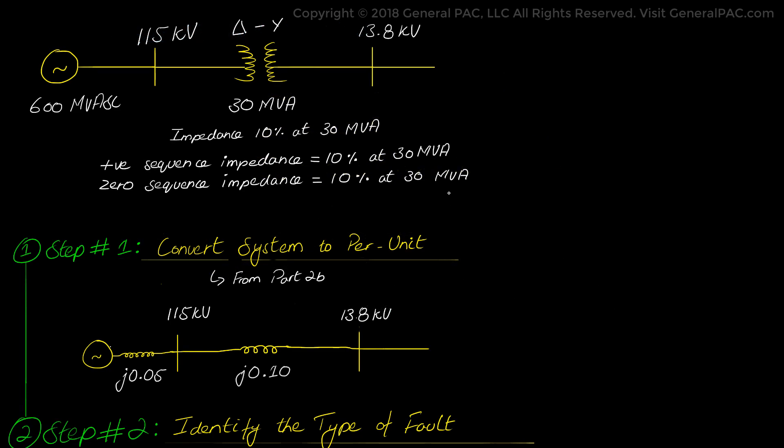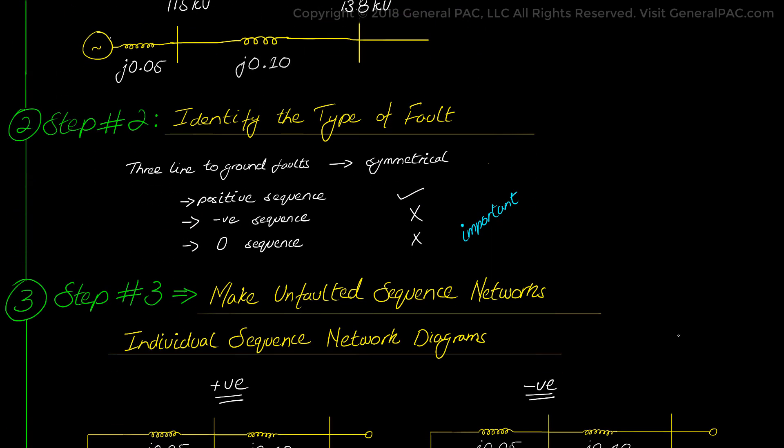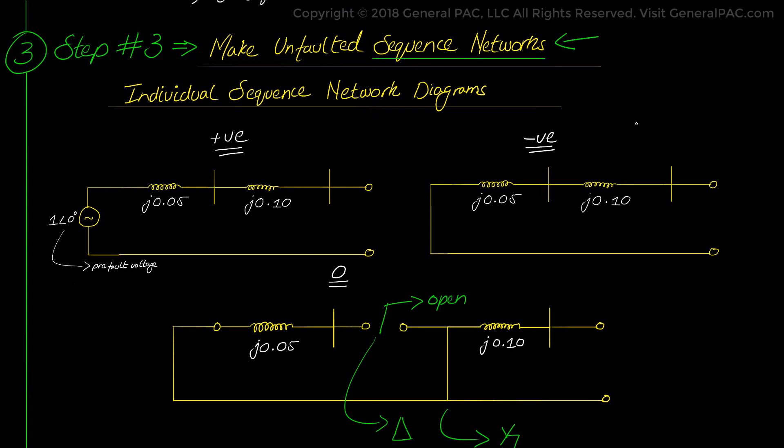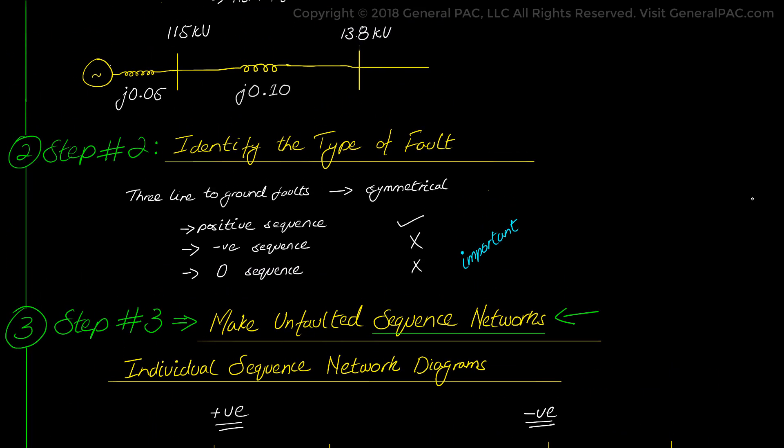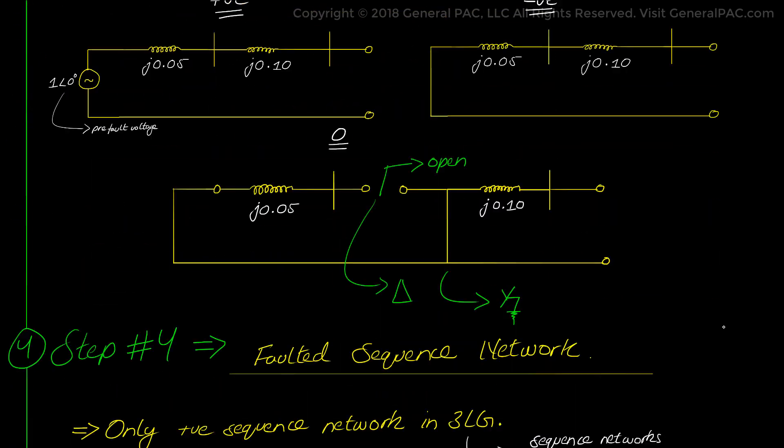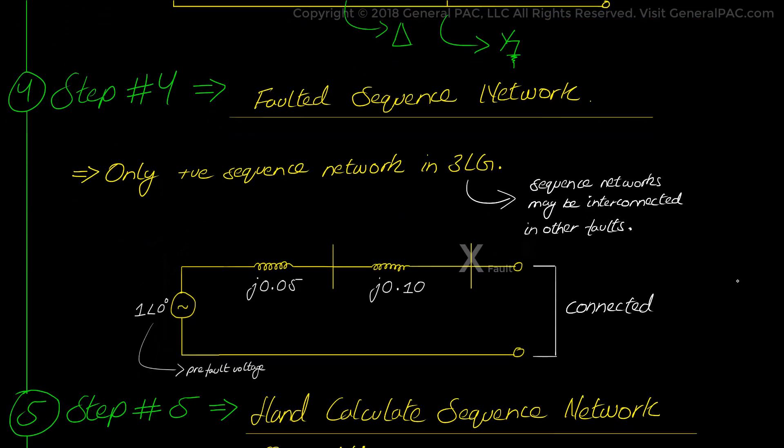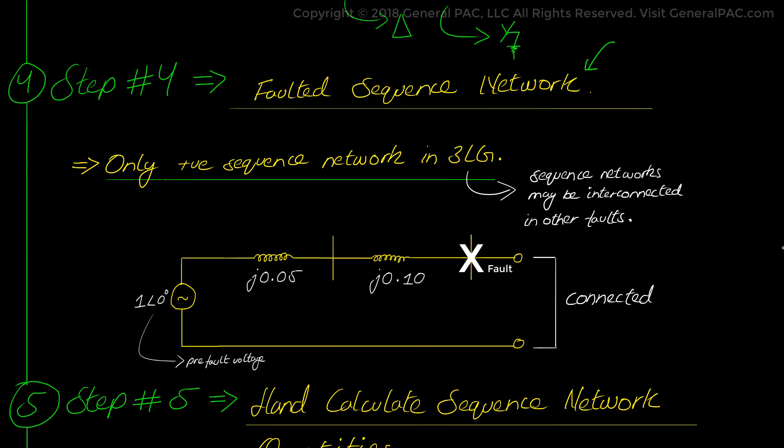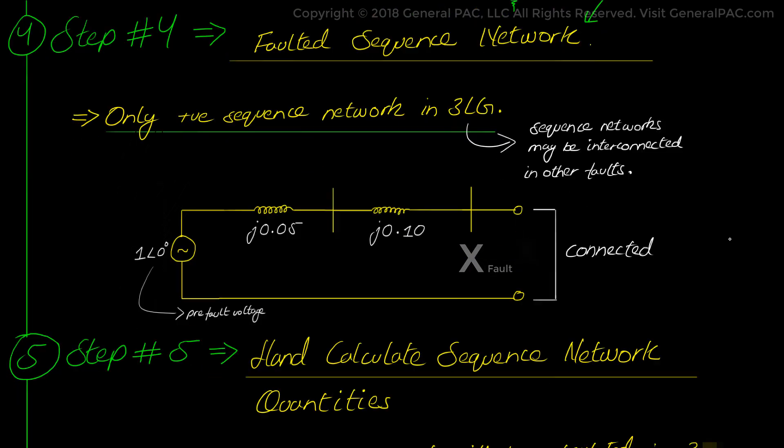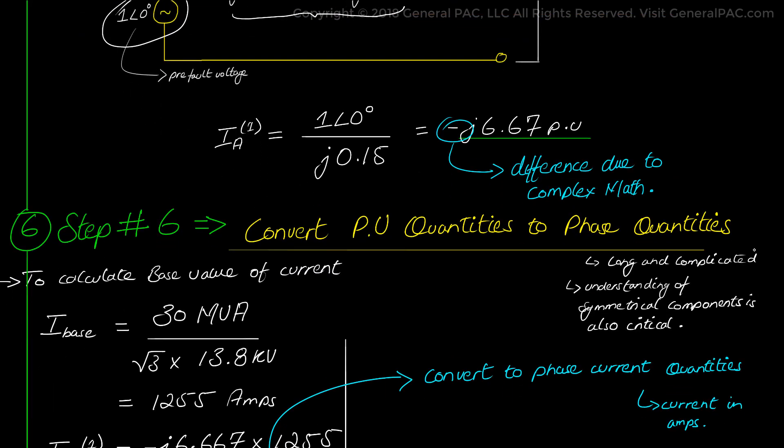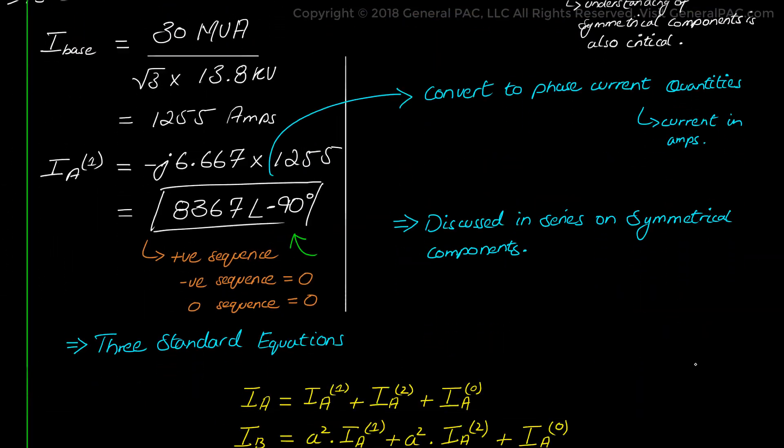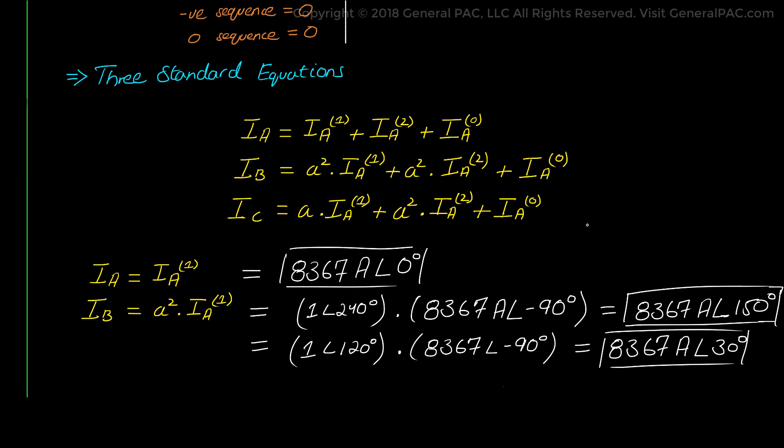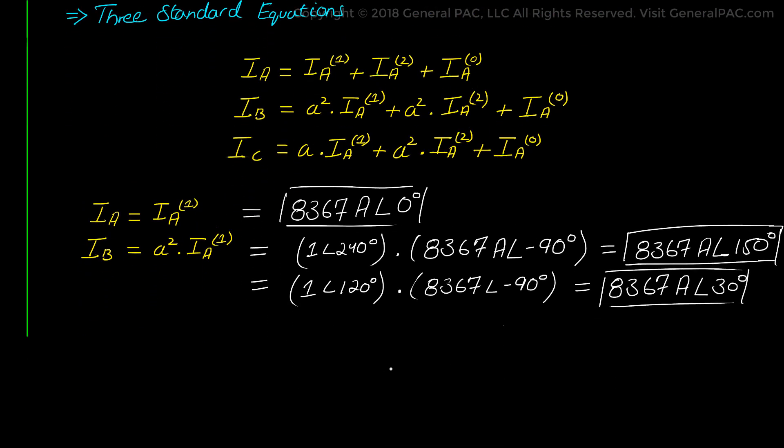Now to summarize this entire example from step 1 to 6 we looked at the system and converted it into per unit values. And then we took the unfaulted sequence network diagrams from it. We drew the positive, negative, zero sequence component. We identified the type of fault it was. And then we eliminated the negative and zero sequence components all together because it was a perfectly balanced three phase fault. And then we converted the per unit values into sequence component values in amperes. And then we converted the sequence component values in amperes to actual phase or line current values for the three phase system. That is the summary of the six steps.